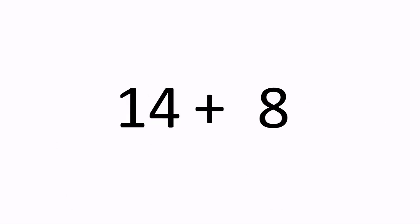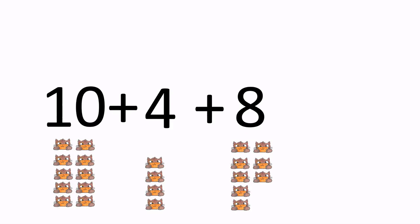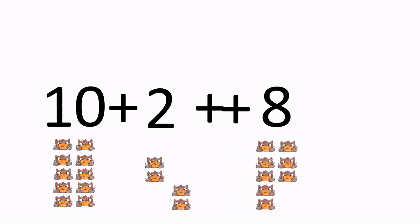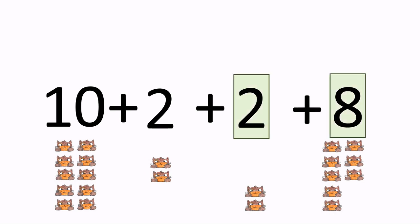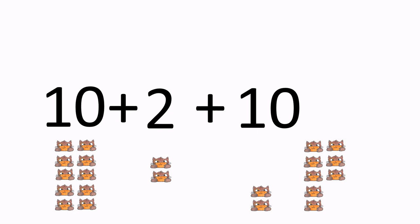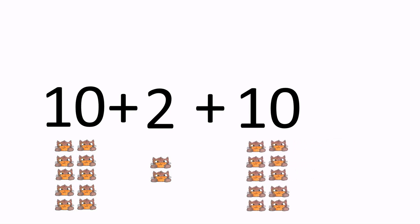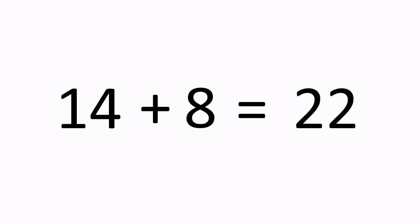Let's practice more. How much is 14 plus 8? We can write 14 as 10 plus 4, and we can write 4 as 2 plus 2. This way we have 10 plus 2 plus 2 plus 8. And 2 plus 8 is 10, so now we have 10 plus 2 plus 10, and that equals 22. So 14 plus 8 equals 22.